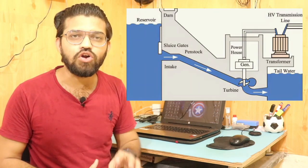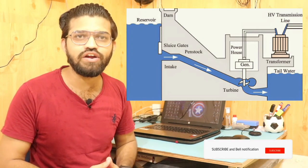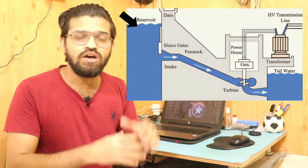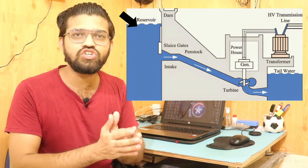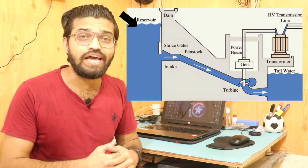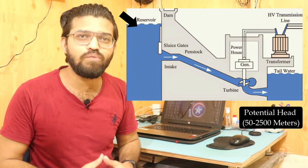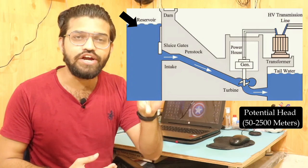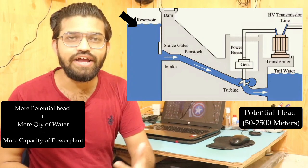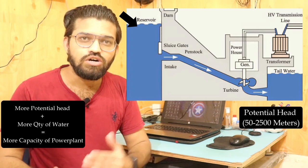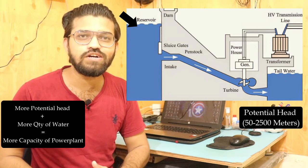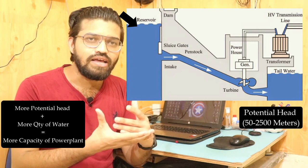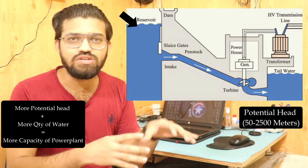Over here you can see the overall representation of a hydroelectric power station, in which rainwater is collected at the reservoir, and the reservoir is at a higher elevation. The water is collected at a higher elevation — we can say a potential head is maintained. The potential head here is of 50 to 2500 meters, so you can imagine the potential head. The more the potential head and the more the quantity of water, these two factors are what decide the capacity of the hydroelectric power plant.